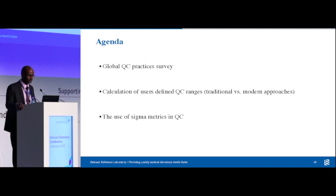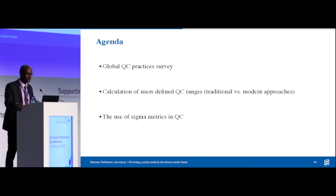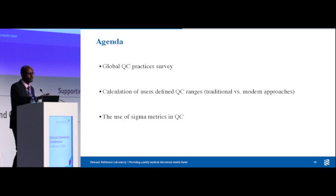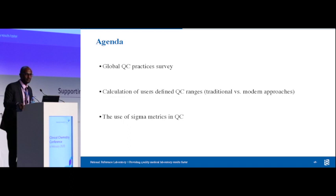I divided my presentation into three components. In the first part, I'll go over a global QC practice survey done by Westgard, so we can know the do's and don'ts from that survey. The second part, we'll go over how to calculate user-defined ranges — the traditional approach and the updated approach as per CLSI requirement. The last part, I'll go over the use of sigma metrics in quality control.